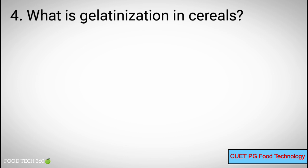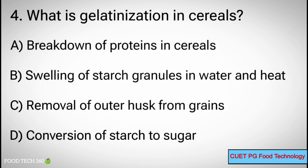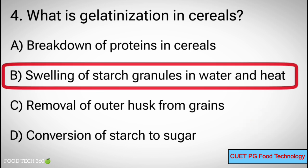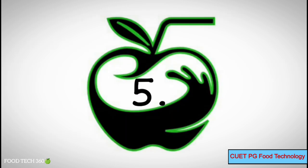Question number 4: What is gelatinization in cereals? Options: A. Breakdown of proteins in cereals, B. Swelling of starch granules in water and heat, C. Removal of outer husk from grains, D. Conversion of starch to sugar. Correct answer: B. Swelling of starch granules in water and heat.